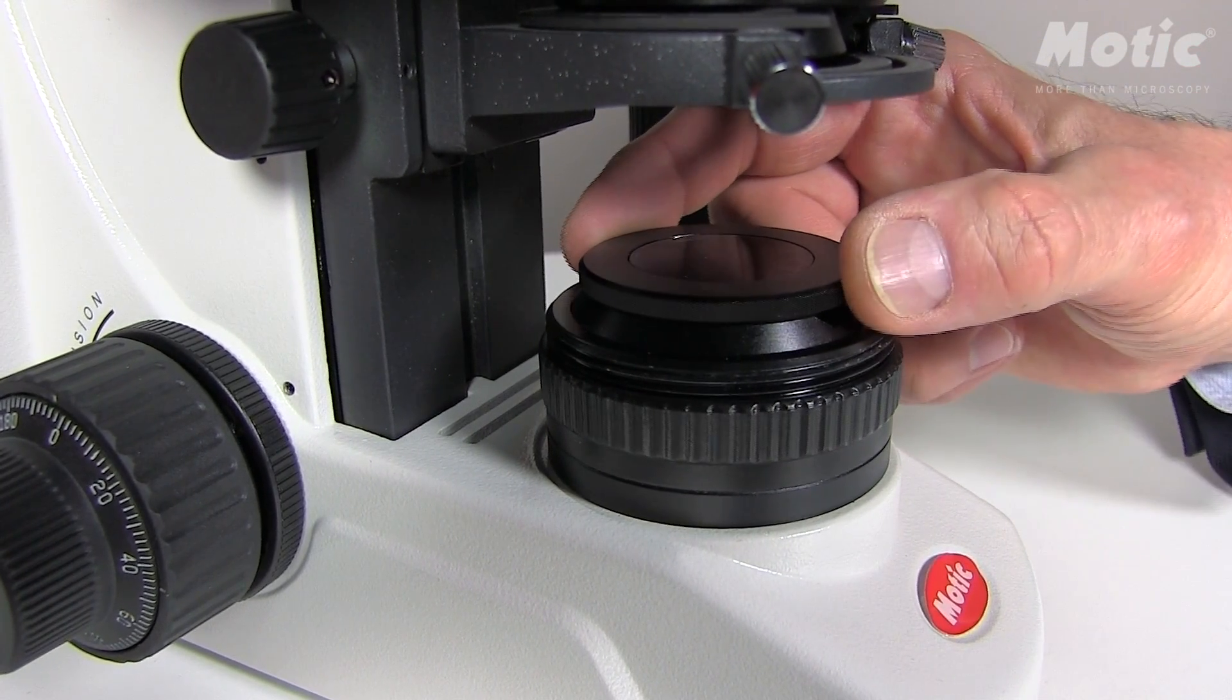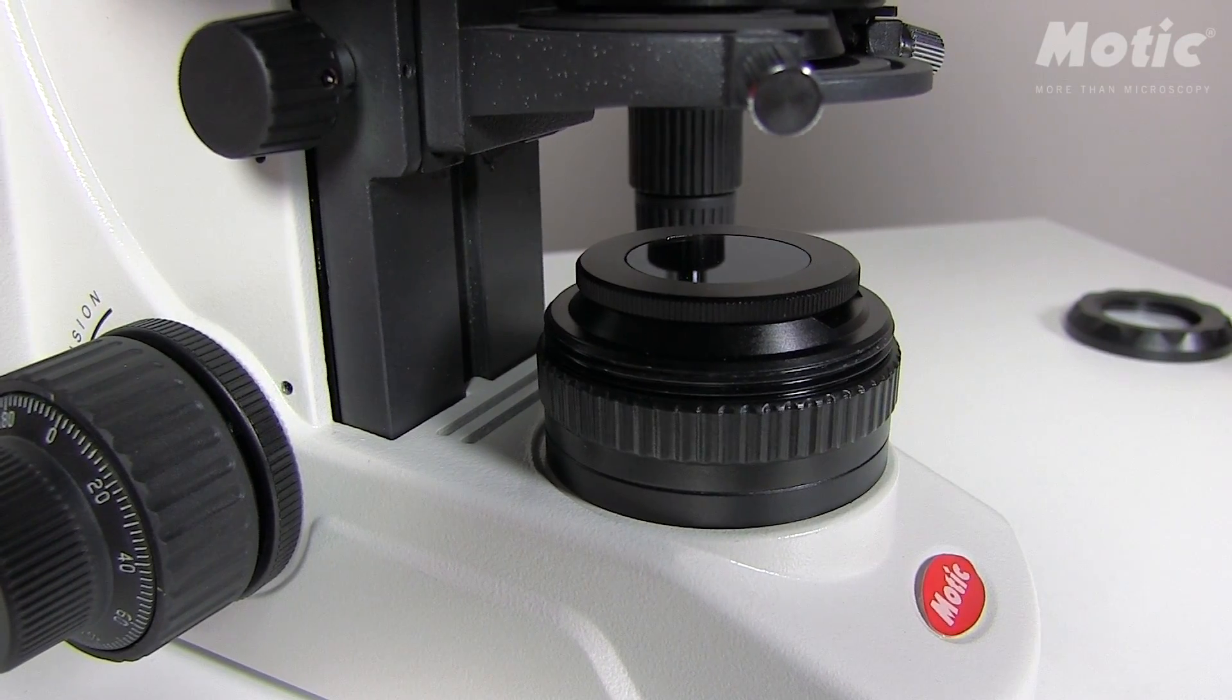The final adjustment of the pole setup is done by rotating the polarizer until the image background is as dark as possible.